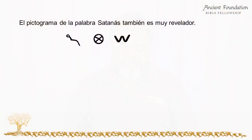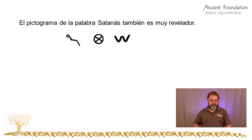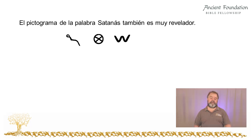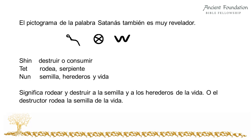The pictograph of the word Satan is also very revealing. Reading from right to left: a shin, a tet, and a nun. Each Hebrew letter has a meaning. The shin means to destroy or consume. The tet means to surround, and a snake. The nun means seed, heirs, and life. When we combine these meanings together, it means to surround and destroy the seed and heirs of life — or, the destroyer surrounds the seed of life. A very powerful meaning in the pictograph of this word. It literally spells out what Satan does: he's the destroyer that surrounds the seed of life.